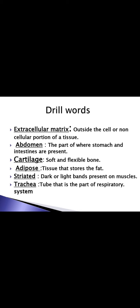First drill word: extracellular matrix — the outside-the-cell or non-cellular portion of our tissue. It is the portion that is outside the cell, not related to the cell, not present inside the cell. Second drill word: abdomen — the part of the body where the stomach, intestine, and reproductive organs are present. This entire area is called the abdominal cavity.